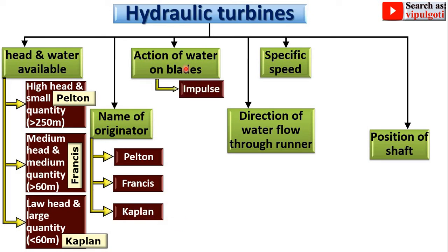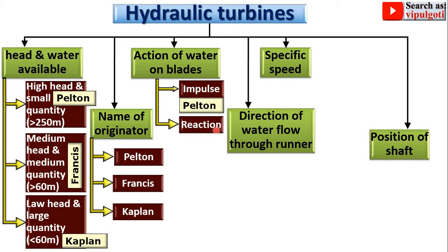Next, classification according to the action of water on blades. The first type is the impulse turbine — the example is the Pelton turbine. The second type is the reaction turbine — examples include the Francis turbine, the Kaplan turbine, and the propeller turbine.